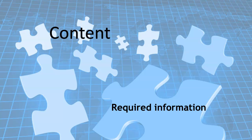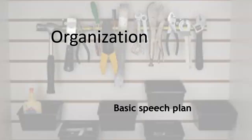Content. Before we open our mouths, we have to put in the content. And generally that's required information — there are certain things you have to say. But if you only had required information, that wouldn't be sufficient. Organization. Before you open your mouth, you organize the words you're going to say. You know the basic speech plan: tell us what you're going to say, say it, tell us what you said. That's a cliche, but it works — a beginning, middle, and an end. Before you open your mouth, you organize your thoughts.